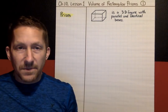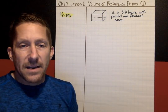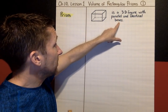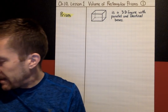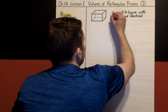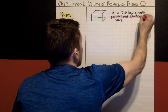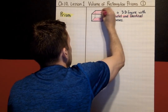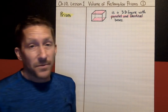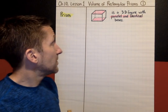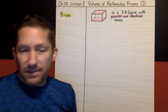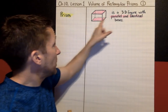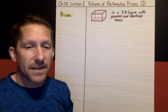As you can see, you can have any kind of prism you want, as long as it has parallel and identical bases. That's the big idea with a prism — parallel and identical bases. Those faces are parallel and identical; they're never going to touch if extended in all directions. This lesson is only talking about rectangular prisms, which are boxes — some kind of a box.